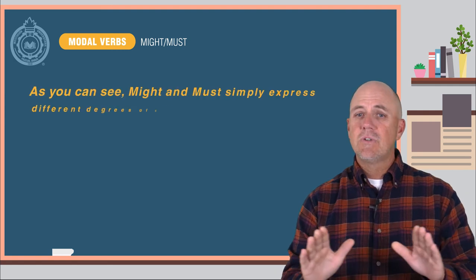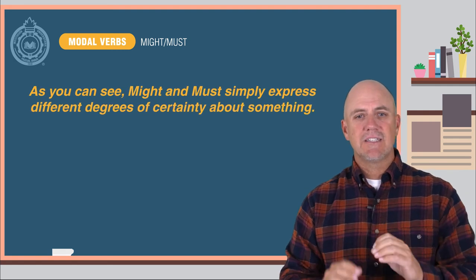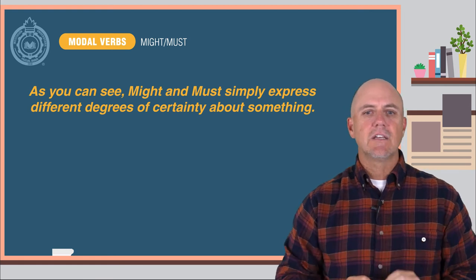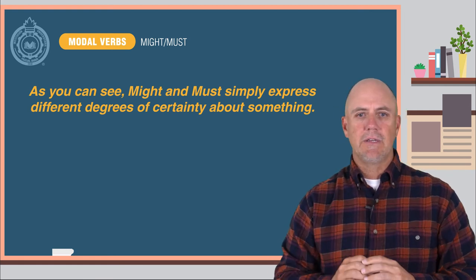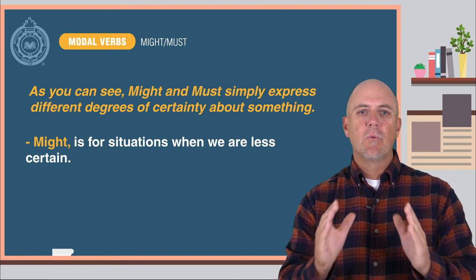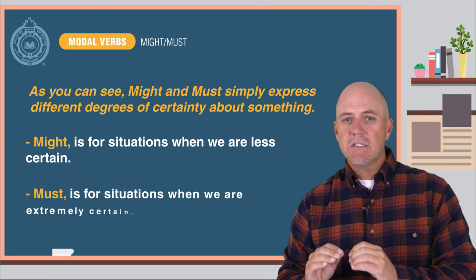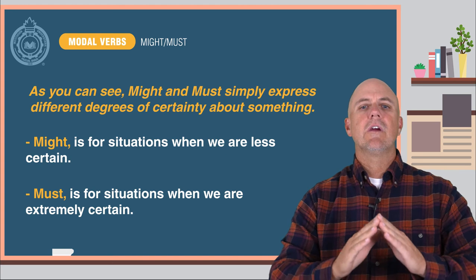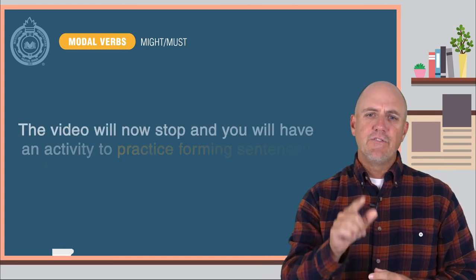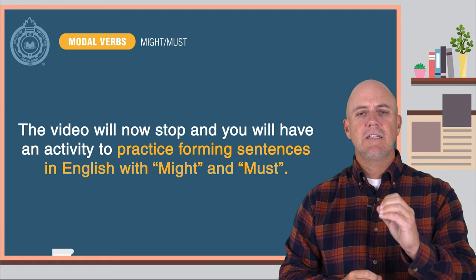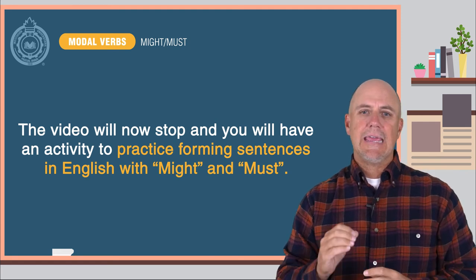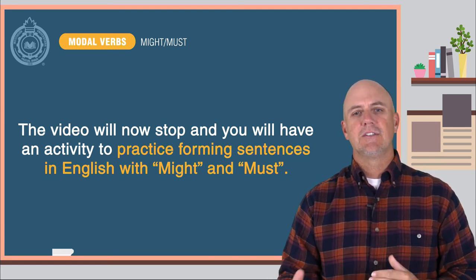As you can see, might and must simply express different degrees of certainty about something. Might is for situations when we are less certain, and must is for situations when we are extremely certain. The video will now stop and you will have an activity to practice forming sentences in English with might and must.